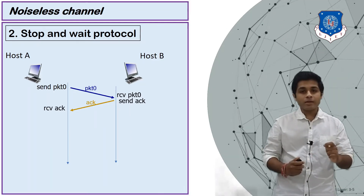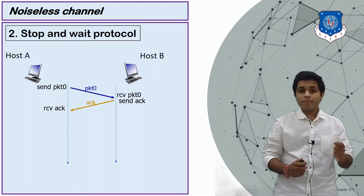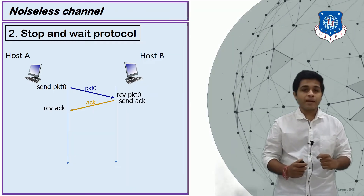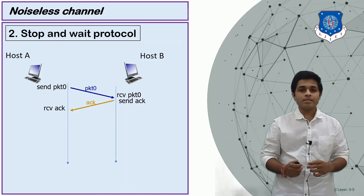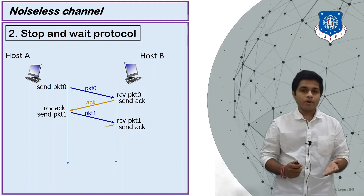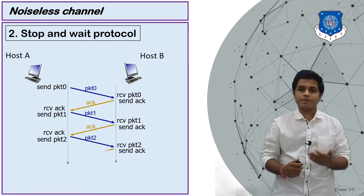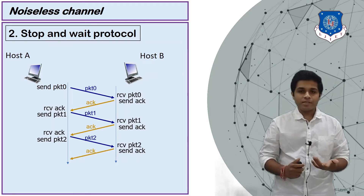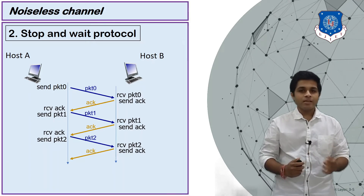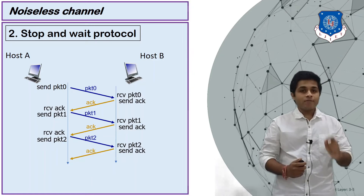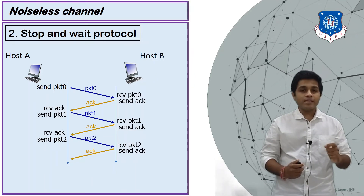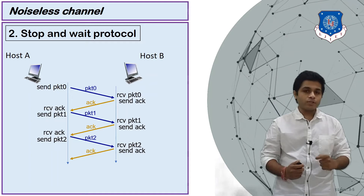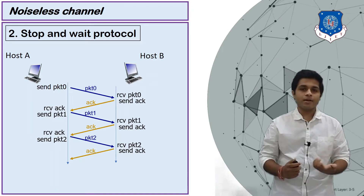From the acknowledgement, A knows that packet 0 was received successfully by B and that B is now expecting the next packet. So A sends packet 1, B receives it and sends an acknowledgement, then A sends packet 2, B receives it and sends an acknowledgement. Throughout this process, after sending each packet the sender stops and waits for the acknowledgement — that is why it is called the stop-and-wait protocol.